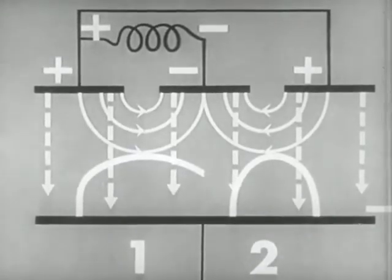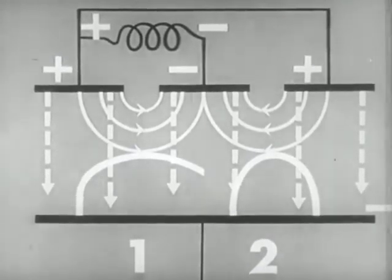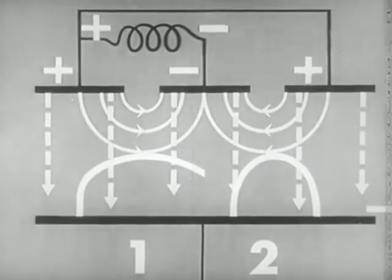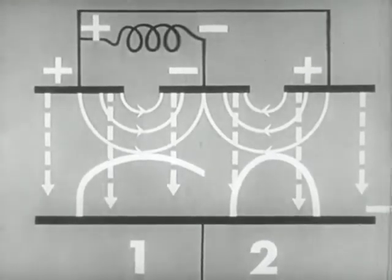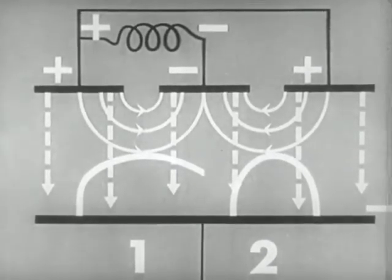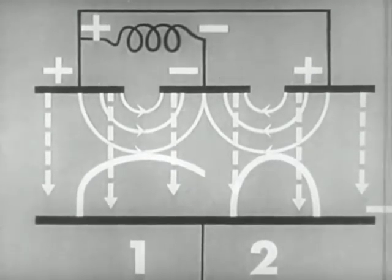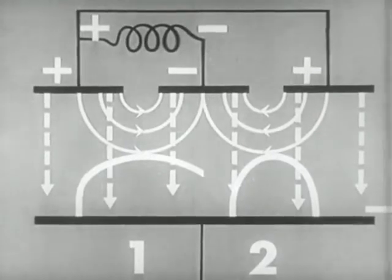The net result is that more energy is given to the RF field by the electron in region one than is taken away from the field by the electron in region two. In this way, two losses are overcome and oscillation can be maintained.